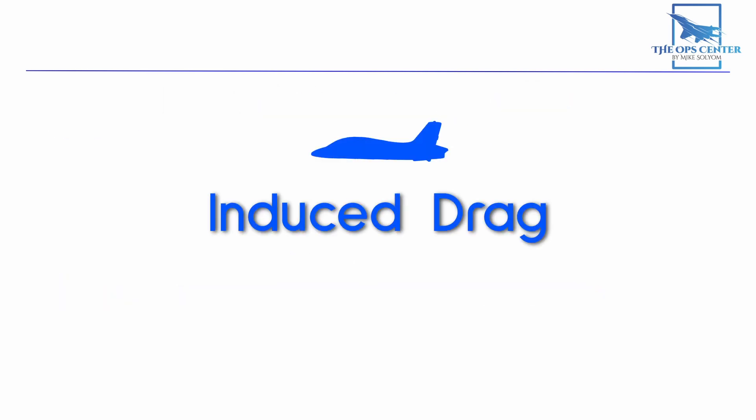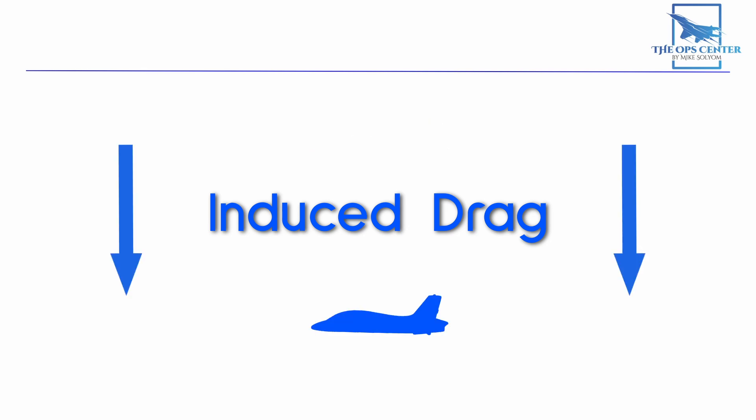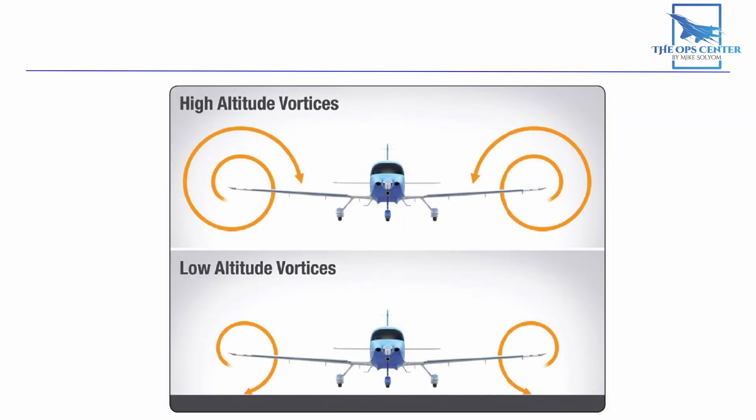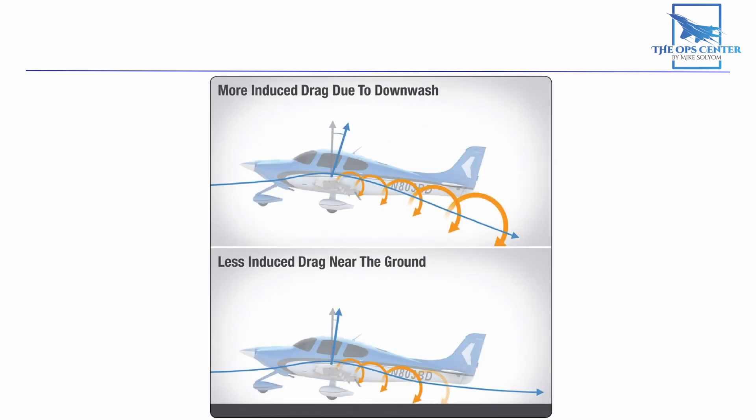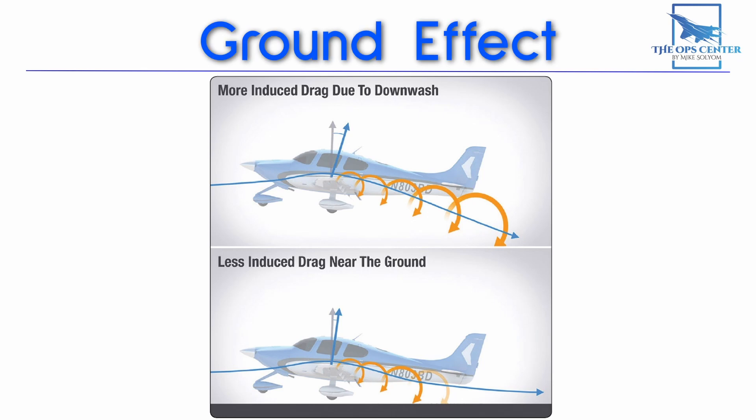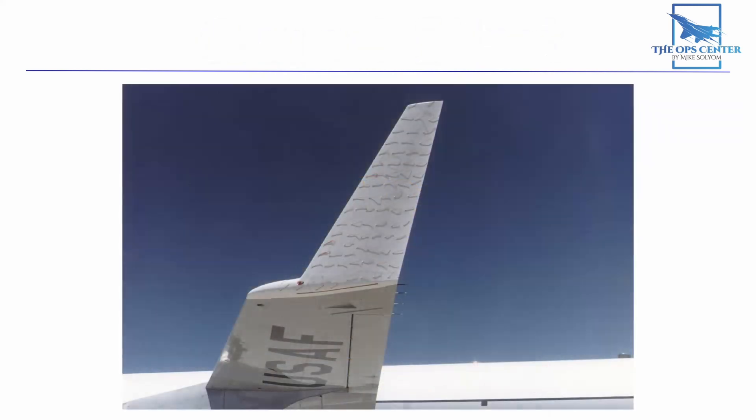There is one other thing to remember about induced drag: it's less pronounced near the ground. That's because the downwash is shaped by the surface of the Earth — the wingtip vortex will be smaller and the angle of the downwash will be less too. This means the lift vector isn't pushed as far back as it would be at a higher altitude. We call this phenomenon the ground effect. Because the Earth's surface flattens the relative wind, it pushes the lift vector closer to straight up.